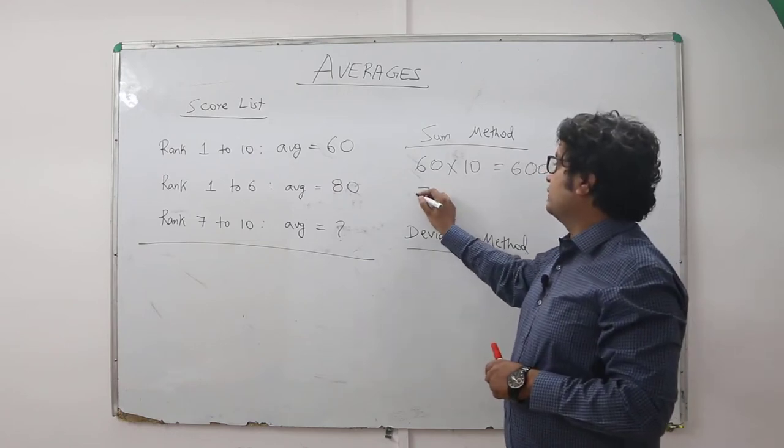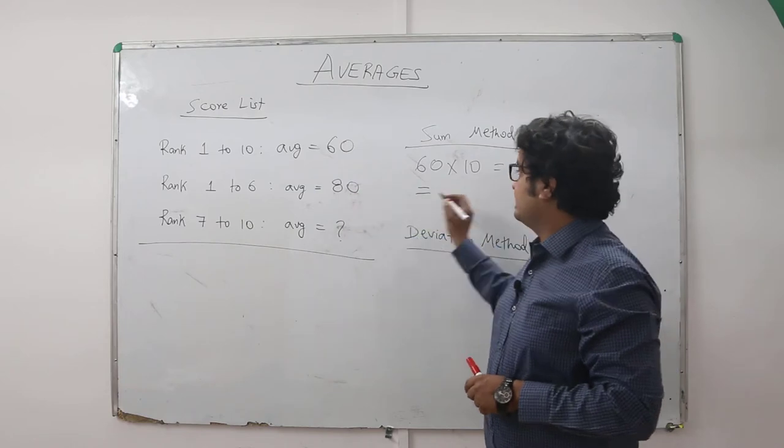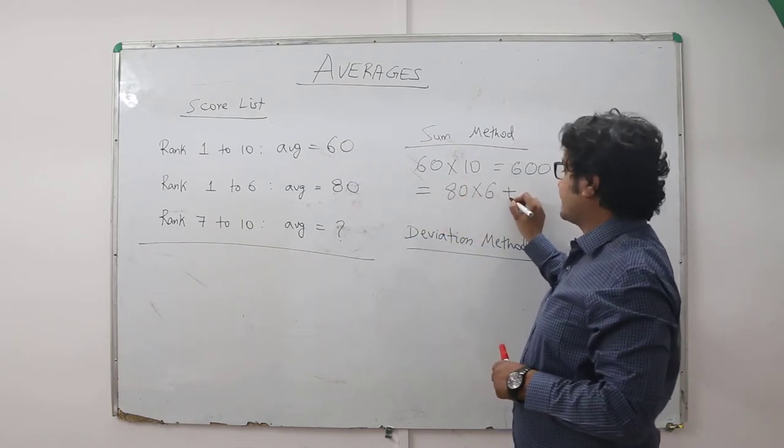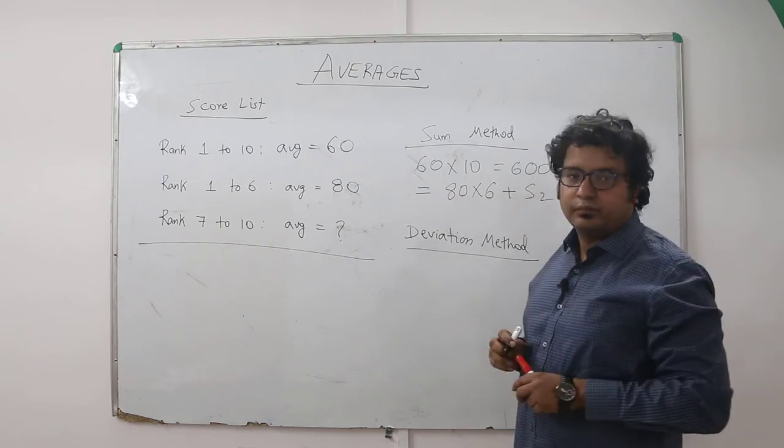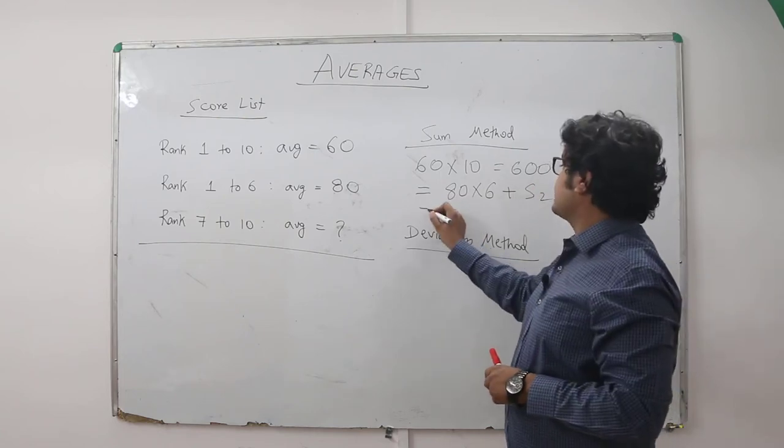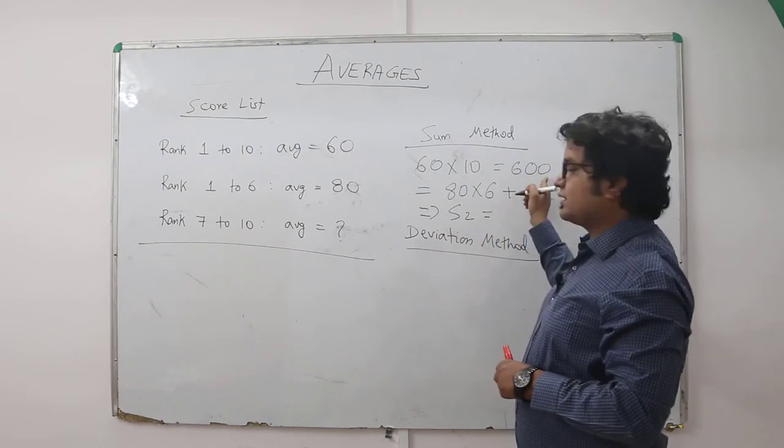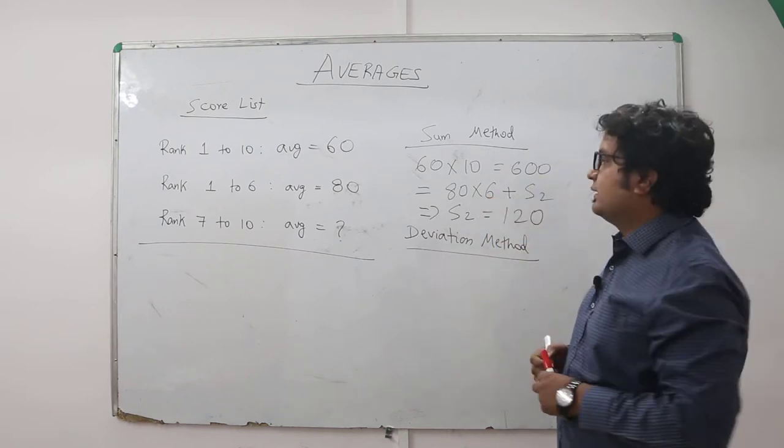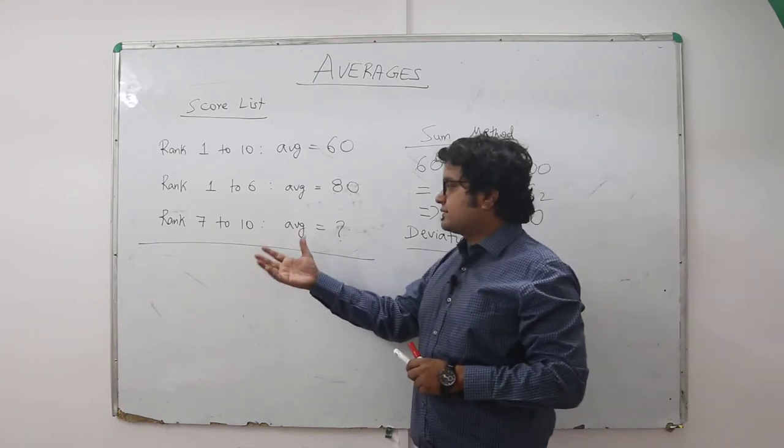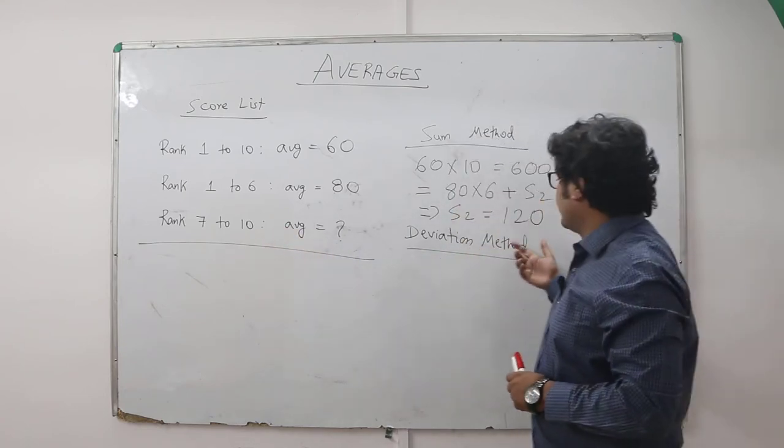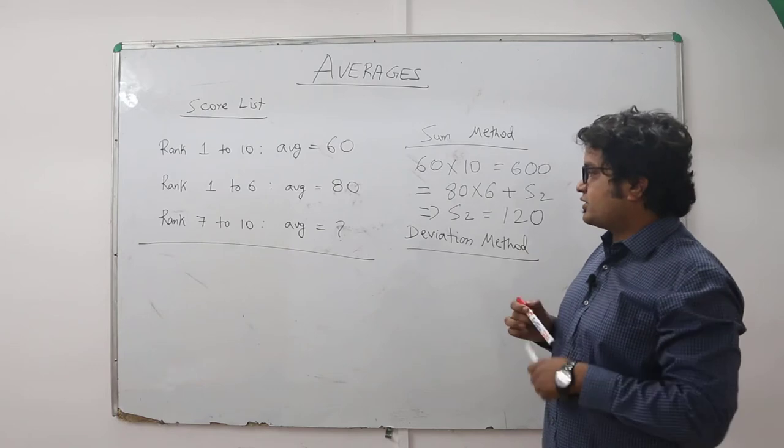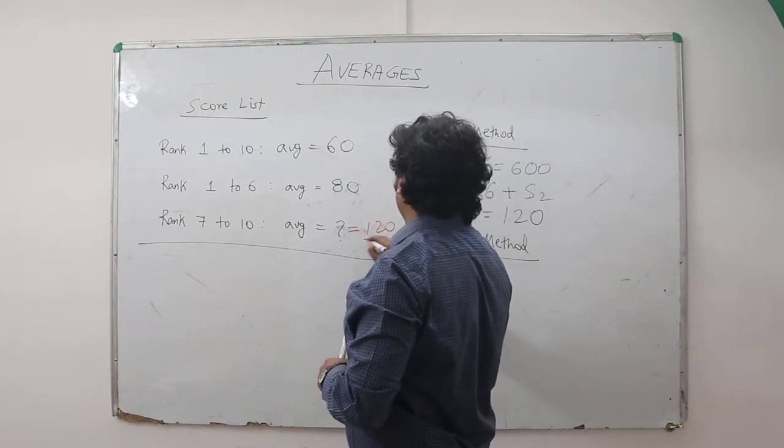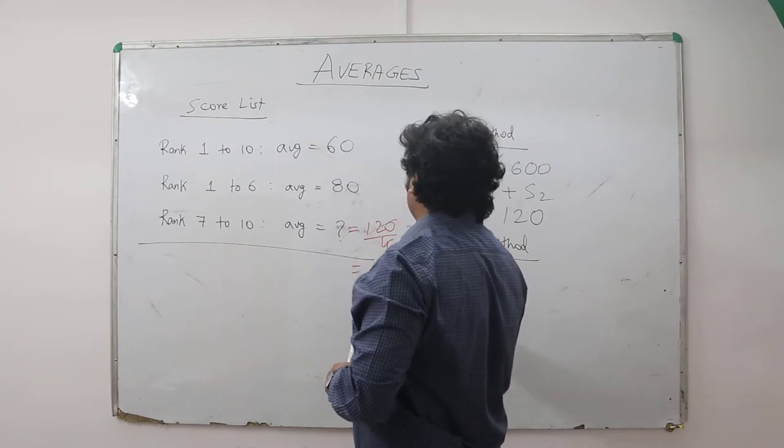Now this can be equated to first sum, that is 80 into 6 plus the second sum, which is unknown. This means that the second sum is nothing but 600 minus 480, that is 120, by which I mean the total score obtained by ranks 7, 8, 9, 10 is 120. So what will be the average? The average will be 120 by 4, that is equal to 30.